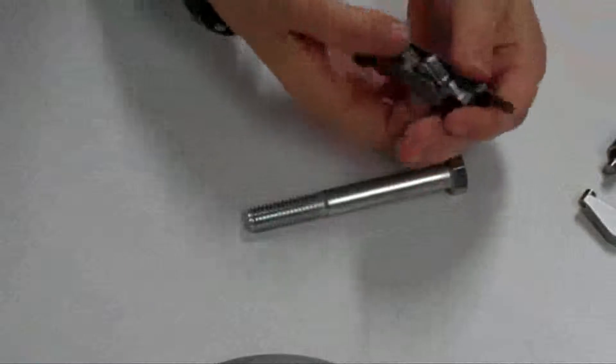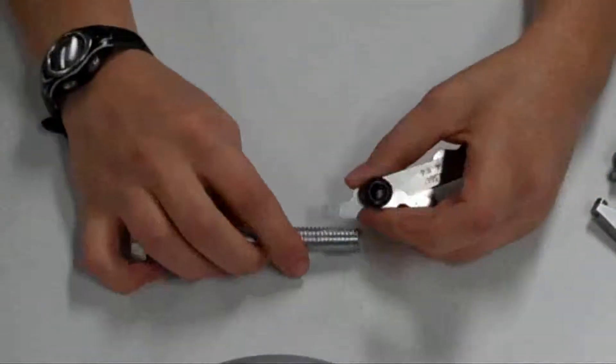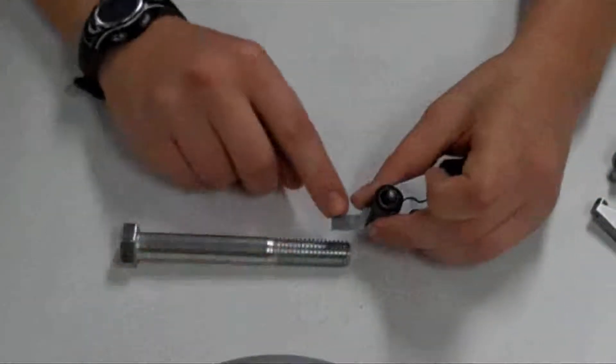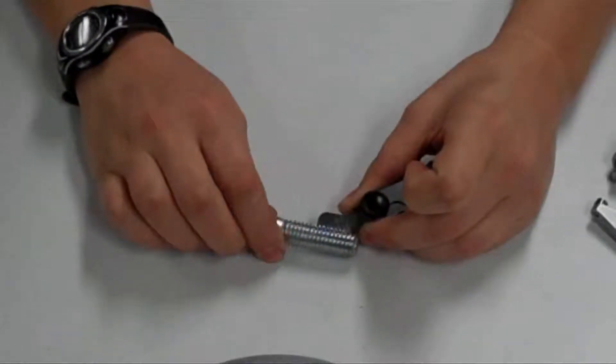With a thread gauge, you want to find the correct tool to fit the threads on your bolt, and then simply read the number off of the correct tool to determine the threads per inch.